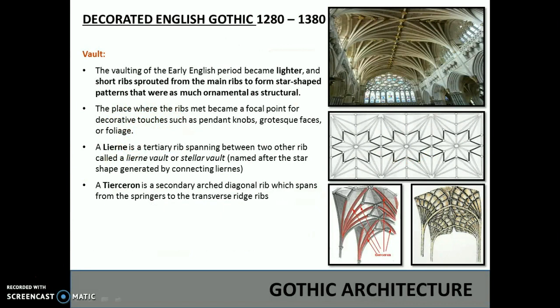The vaulting of the Early English period became lighter, and short ribs sprouted from the main ribs to form star-shaped patterns that were as much ornamental as structural. The place where the ribs met became the focal point for decorative touches such as pendant knobs, grotesque faces or foliage. The lierne is a tertiary rib spanning between two ribs, called a lierne vault or stellar vault, named after the star shape generated by connecting liernes. A tierceron is a secondary arch-diagonal rib which spans from the fingers to the transverse ridge ribs.